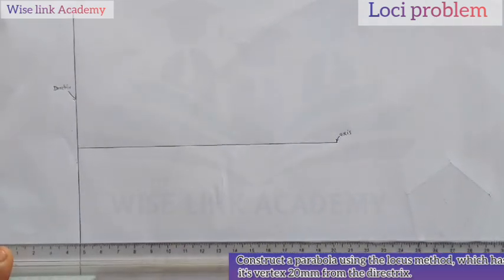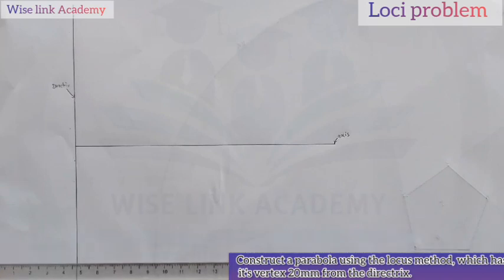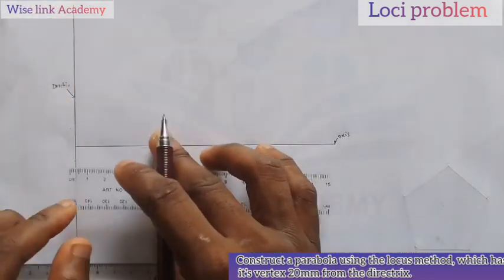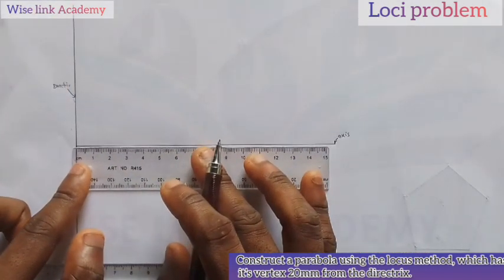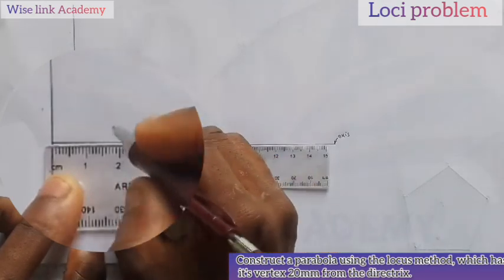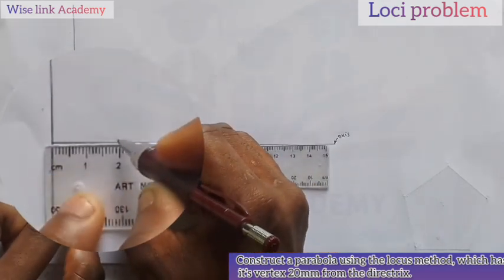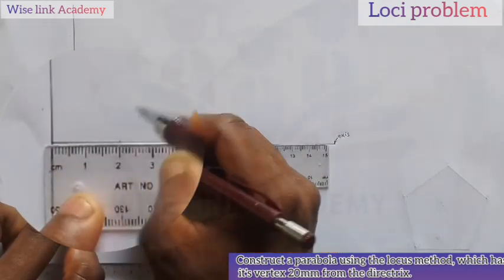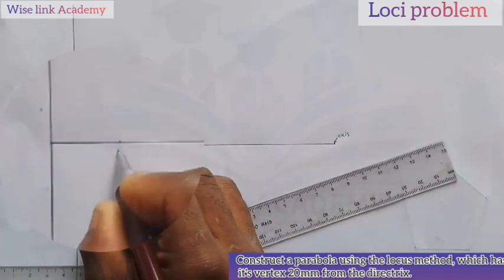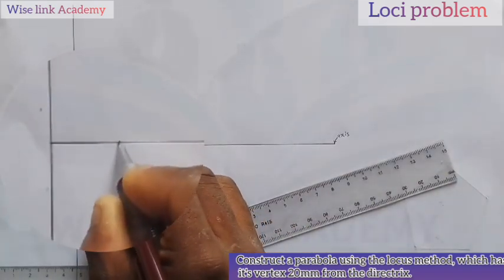My next task now is that we are told that vertex is 20mm. So, vertex is simply the distance from your directrix. This is my directrix here. Distance from this point here to this point. Measure out 20, which is for my vertex. So, here is my vertex V, my point V.